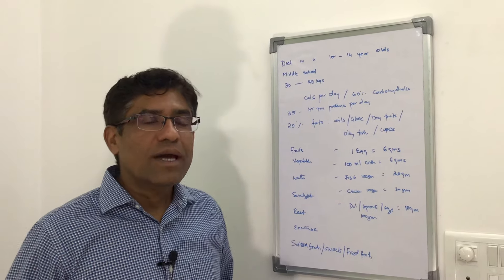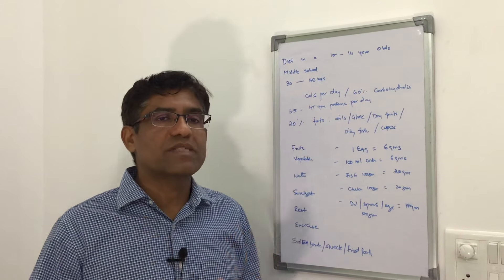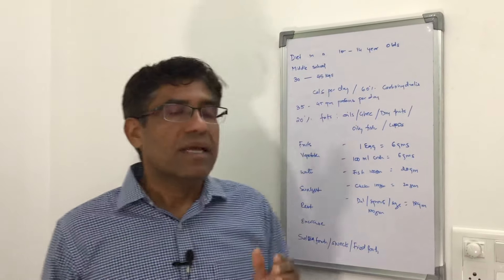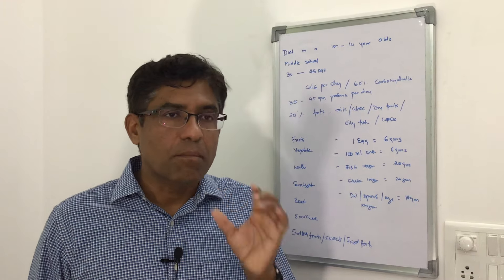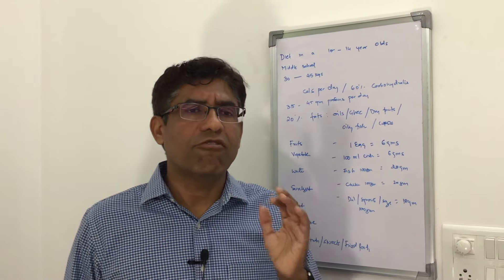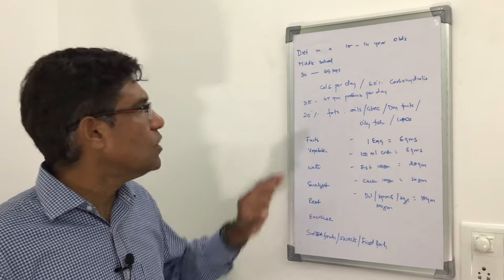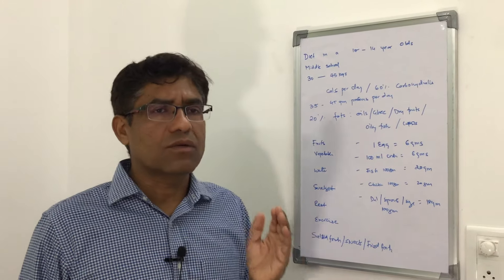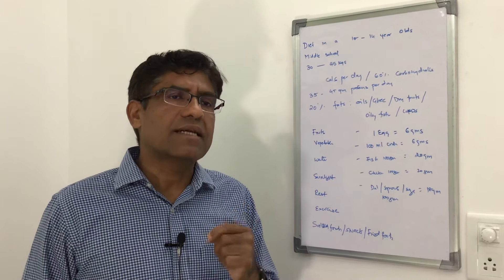Today I'm going to give a diet chart for a specific age group: 10 to 14 year olds, children who are between fifth standard to eighth standard, which is middle school. Their approximate weight will range from 30 kg to 40 or 45 kg. These children roughly require 1500 to 1800 calories every day.